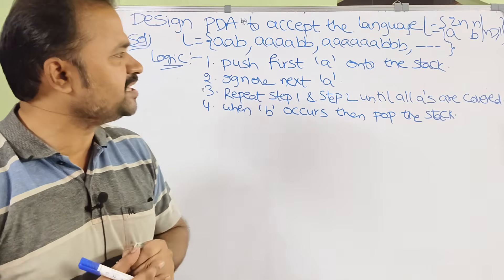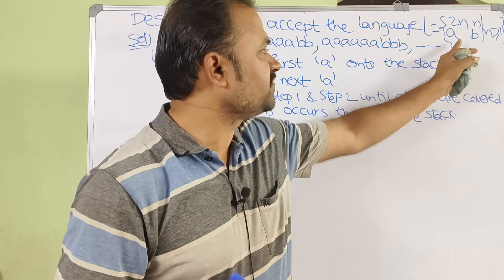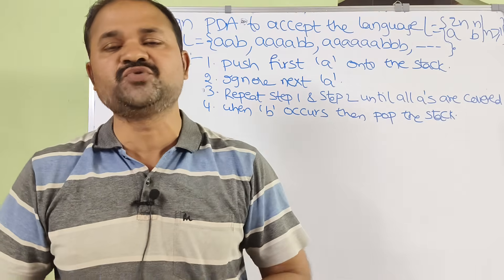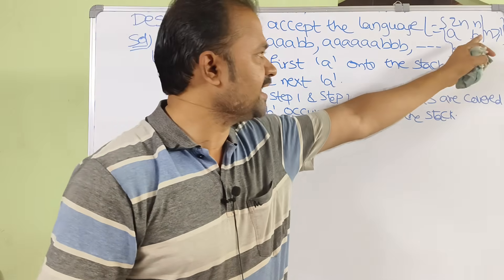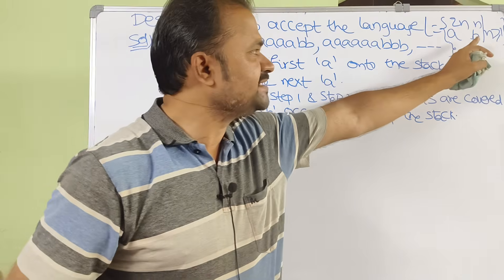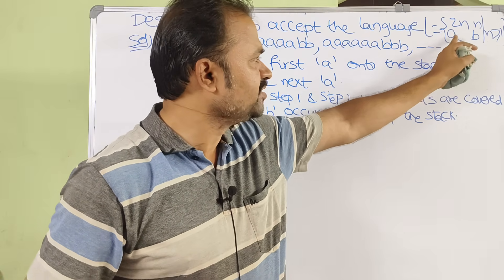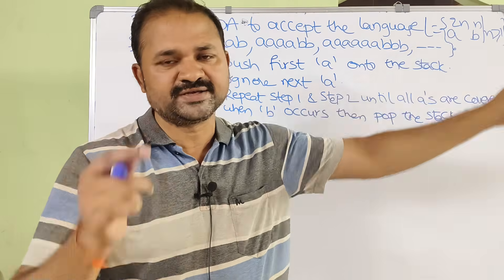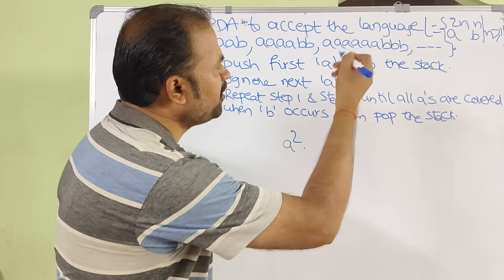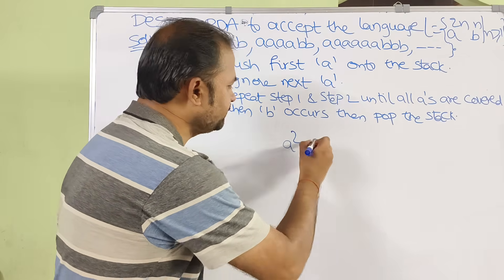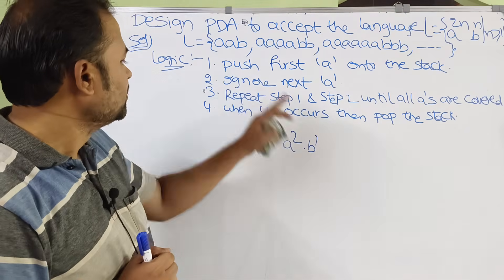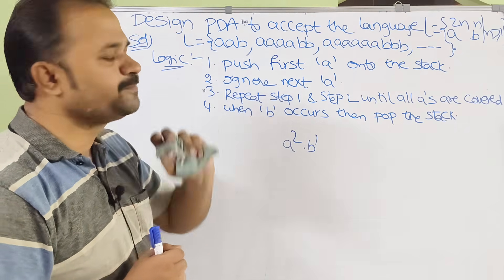Design a PDA to accept the language L = A^(2N) B^N where N is greater than or equal to 1. Here N starts from 1. If N equals 1, then we get A^2 · B^1, meaning we write A twice and B once.